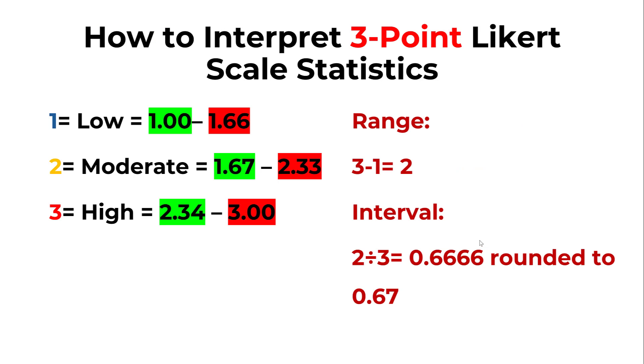After that, we can interpret the three-point Likert scale overall mean score according to these ranges. From one to 1.66 corresponds to low value. From 1.67 to 2.33 corresponds to moderate value. And from 2.34 to 3 corresponds to high value, or whatever label you put here.